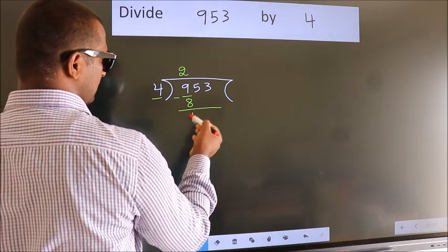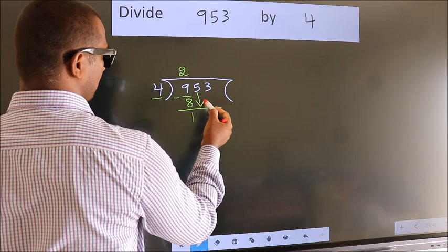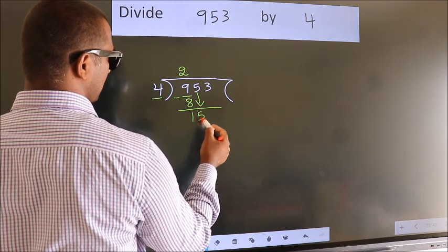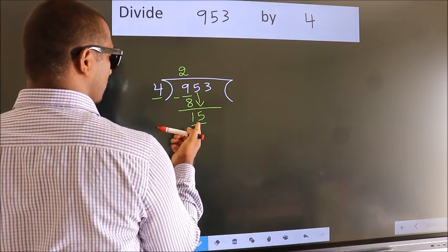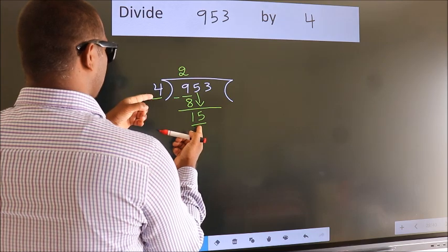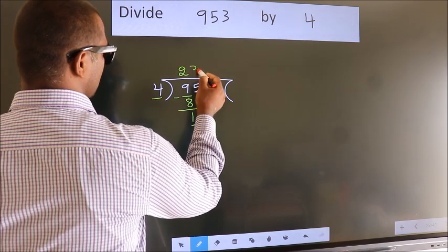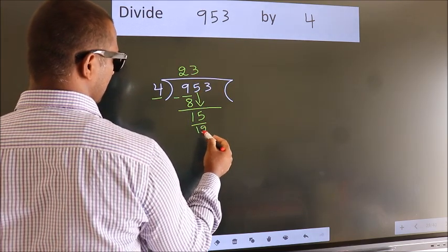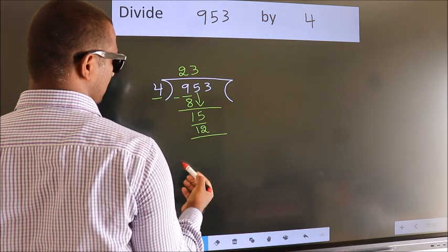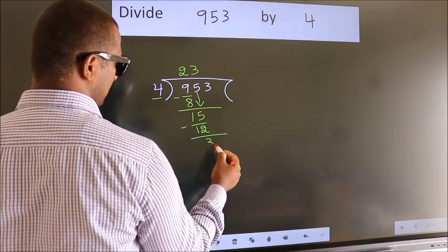After this, bring down the beside number. So, 5 down. So, 15. A number close to 15 in 4 table is 4 threes, 12. Now, we subtract. We get 3.